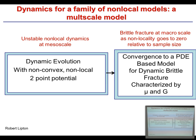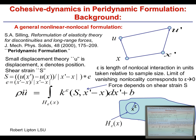We're going to have a non-convex non-local two-point potential, and we'll show that it localizes to something based on the peridynamic model — cracks. We're going to assume the non-locality goes to zero relative to the sample size and see what happens to this mesoscopic evolution. We do this within a peridynamic context. Many of you have seen molecular dynamics, and you'll see similarities between these two approaches.